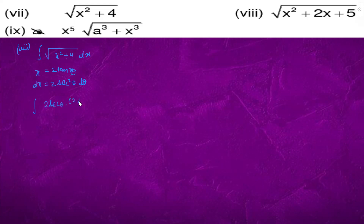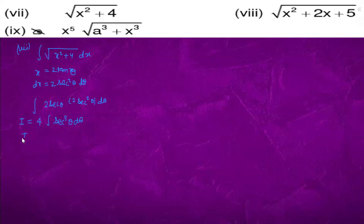With dx = 2sec²θ dθ, the integral becomes 4sec³θ dθ, which equals I. Now we will use integration by parts to solve ∫sec³θ dθ.